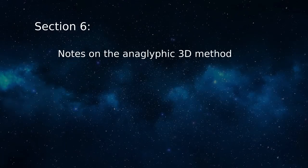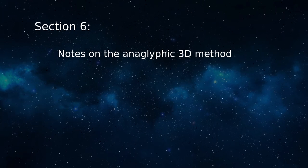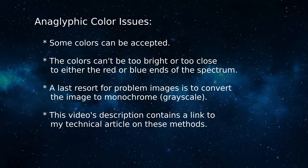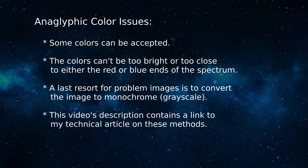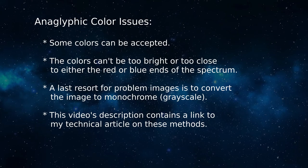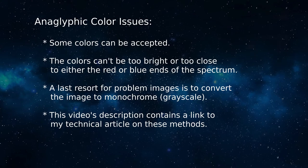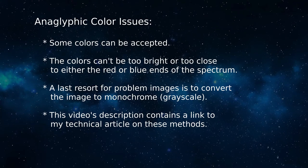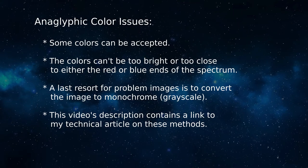In this section I want to discuss some of the limitations and workarounds for the anaglyphic method. When I started choosing pictures for use with this method, I assumed they would all need to be drained of their original colors, made entirely monochromatic, so the special red-cyan color keying would work as it should. But I soon discovered some colors would work and wouldn't spoil the 3D effect as long as they weren't too bright or too near either the red or blue ends of the spectrum.